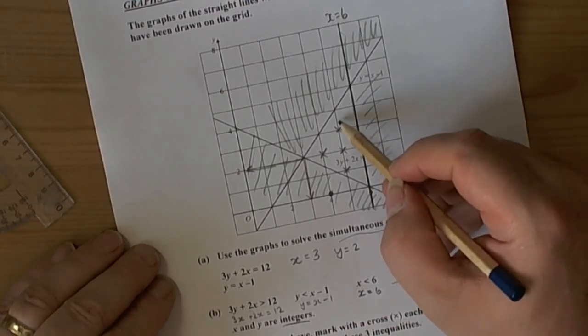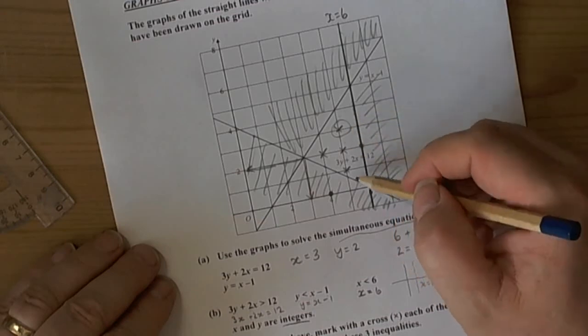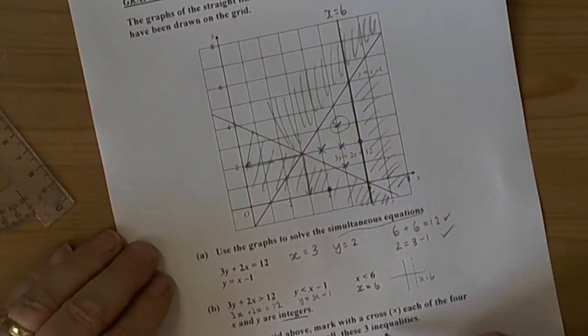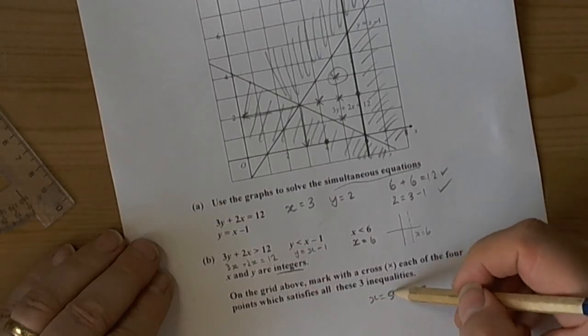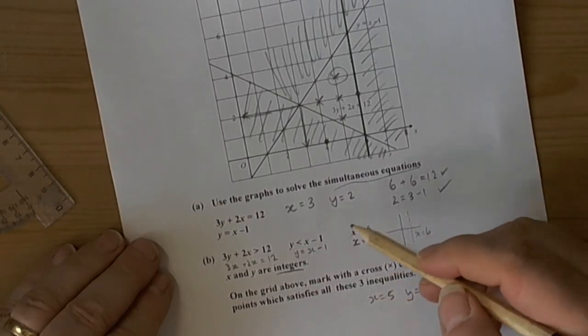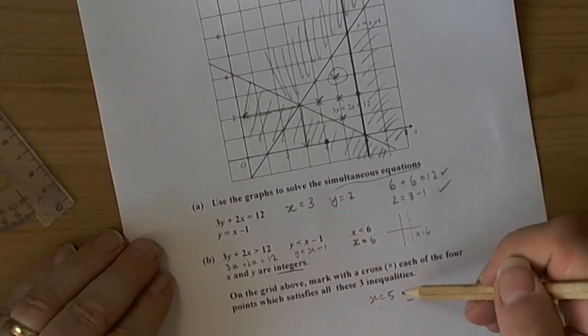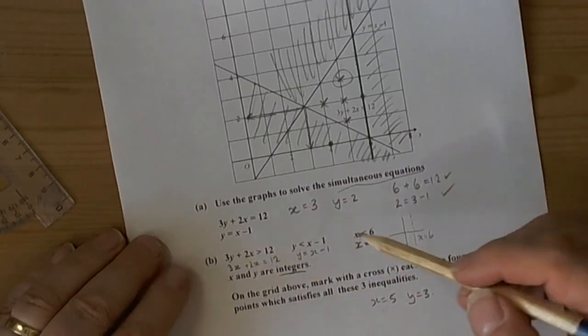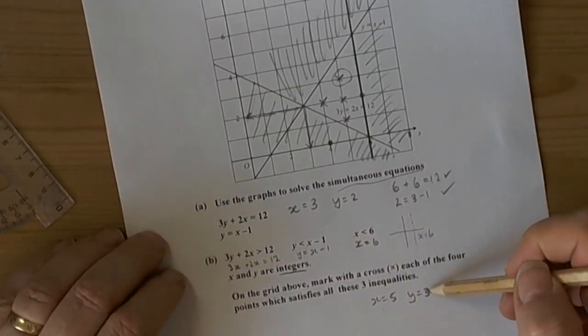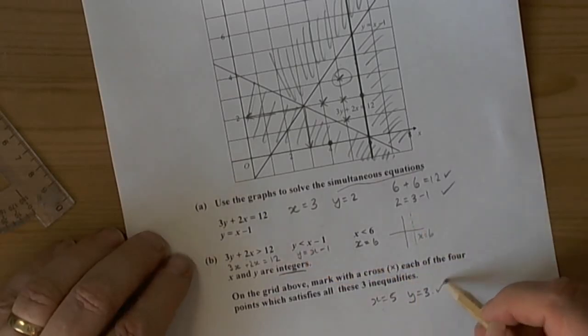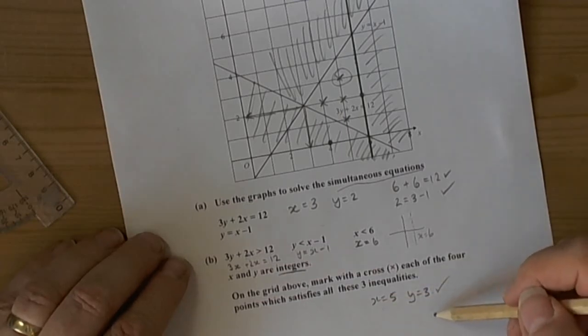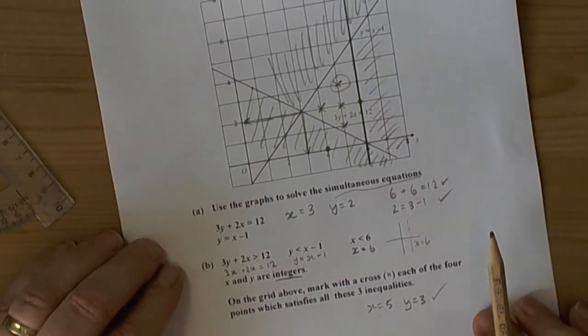We can check one to make sure we're not making mistakes. This point has coordinates (5, 3). Let's check all the inequalities: x is less than 6, yes. y is less than x minus 1, which is 4, and 3 is less than 4, yes. For the first inequality: 3 times 3 is 9, 2 times 5 is 10, 9 plus 10 is 19, which is bigger than 12, yes. So this is a correct answer.